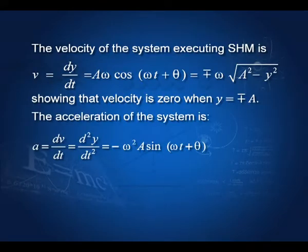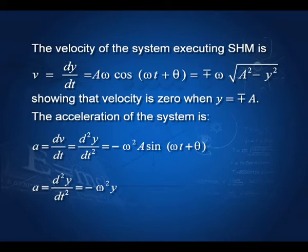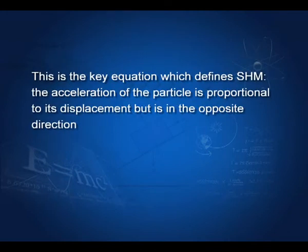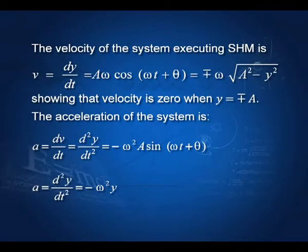The acceleration is a = dv/dt = d²y/dt². Differentiating v = aω cos(ωt + θ) gives acceleration = −ω² · a sin(ωt + θ) = −ω²y. This is the key equation that defines SHM. Whenever we are asked to recognize a motion as SHM, we look for this equation: acceleration equals −ω²y. That is, acceleration is in the opposite direction to displacement and its magnitude is proportional to displacement — that is the signature of simple harmonic motion.